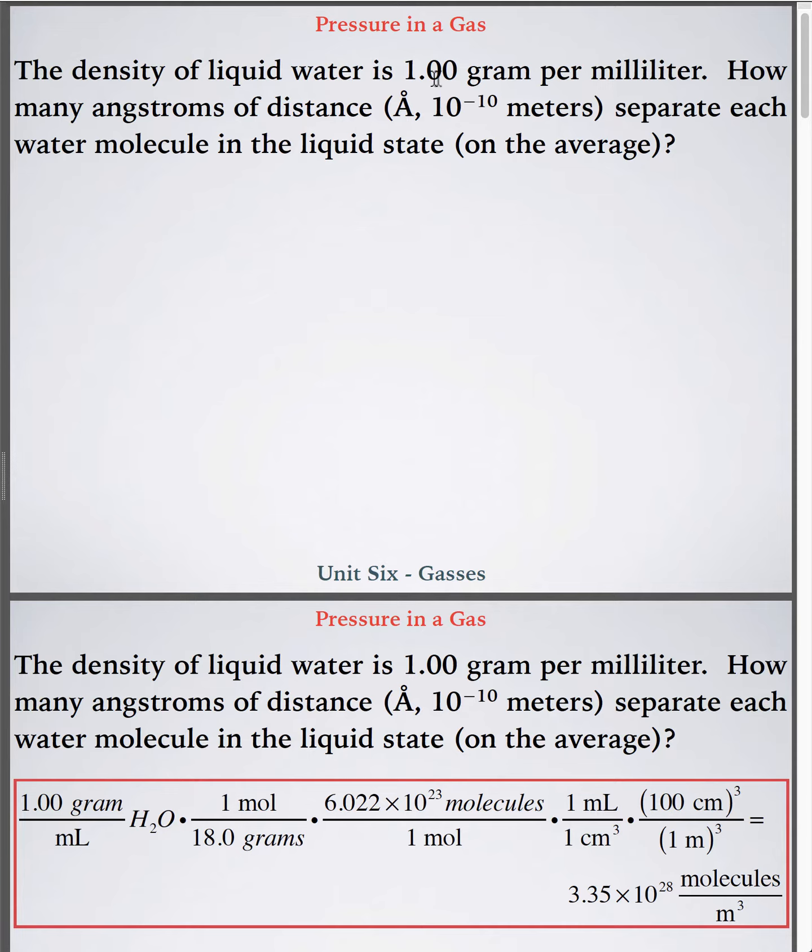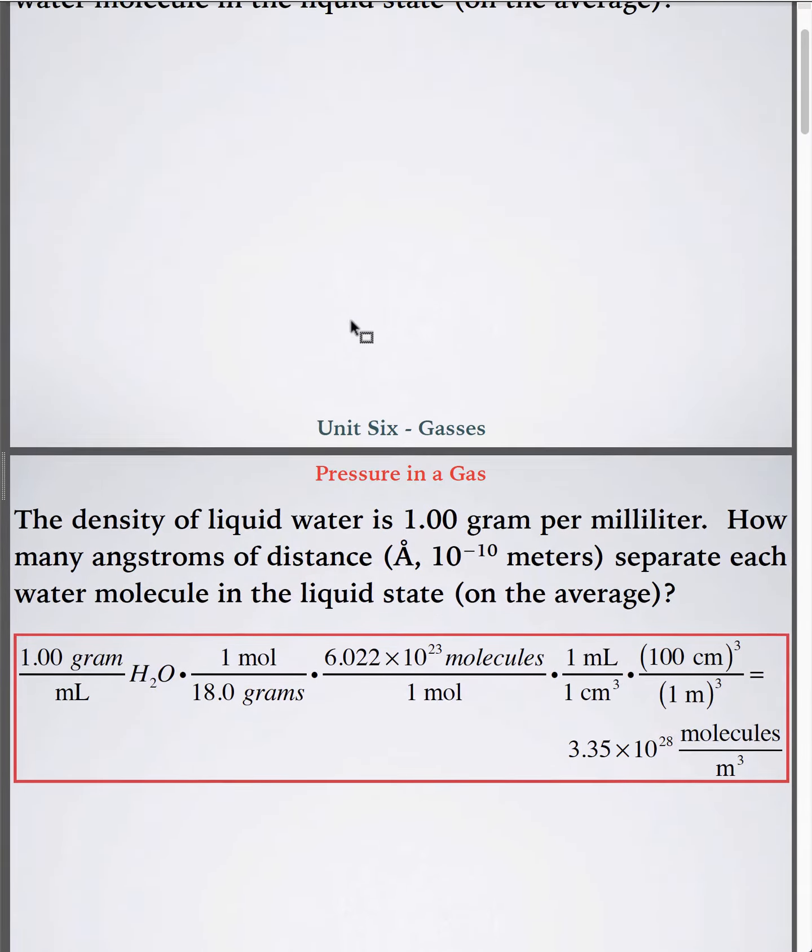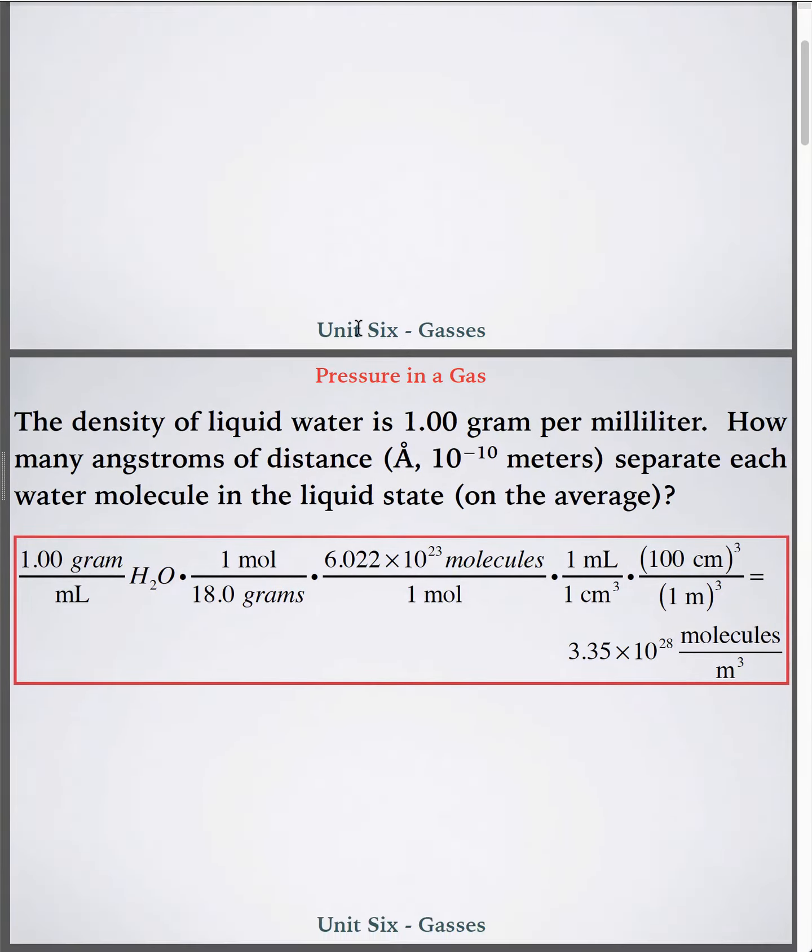So for example, if water has a density of one gram per milliliter, and it does, and I know that water is H2O, and I know the molar mass of water, I can take it quite a ways. So here's one gram is one milliliter of water.